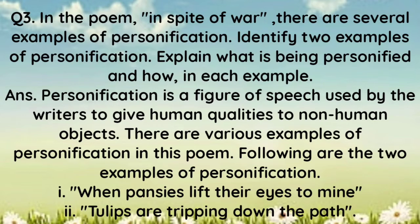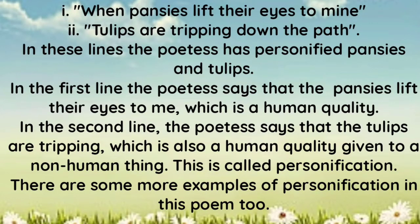Following are two examples of personification: 'When pansies lift their eyes to me' and 'Tulips are tripping down the path.' In these lines, the poetess has personified pansies and tulips. In the first line, the poetess says that the pansies lift their eyes, which is a human quality. In the second line, the poetess says that the tulips are tripping, which is also a human quality given to a non-human thing. This is called personification.